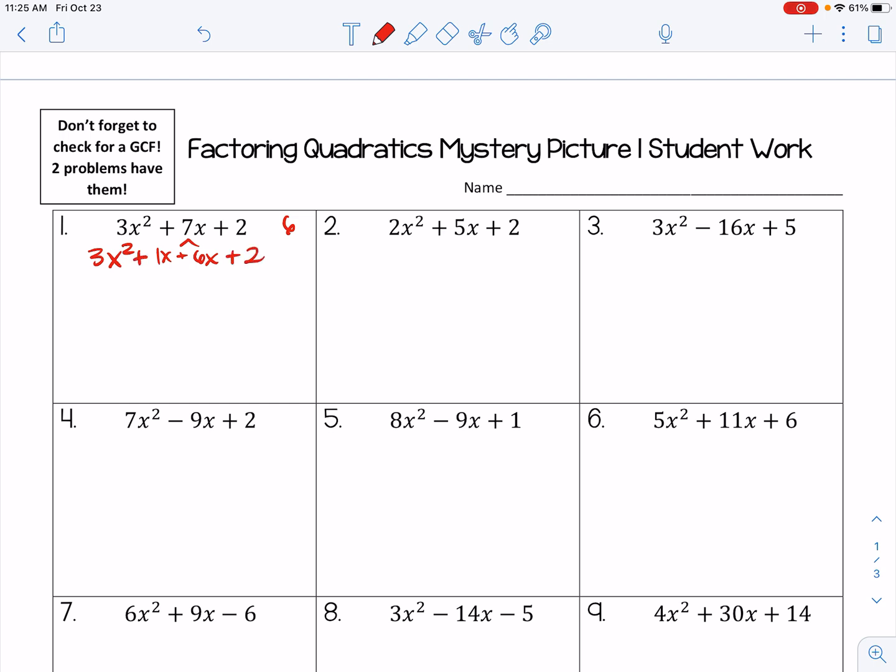And so now, like I said, I can factor by grouping. So I want to look at the first two terms and pull out a GCF. So what is my greatest common factor between 3x² and 1x? Well, the only thing they have in common is x. So I'm going to pull that out. What's left when I divide or when I factor out an x is 3x + 1.